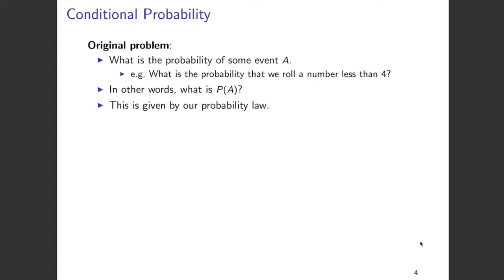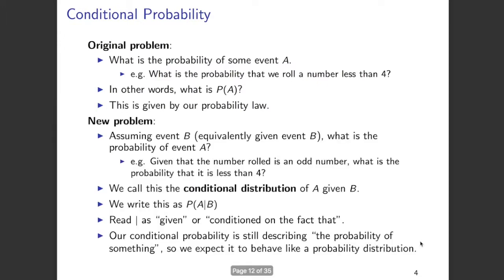Hi everyone. In this video we are going to talk about conditional probability. So far what we have studied is the unconditional probability of some event A. An example of this is: what is the probability that we get a number less than 4 when we roll a die? What we are looking at here is the probability of A, and this is known as our probability law.